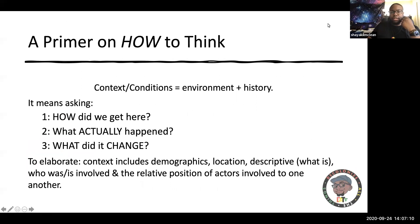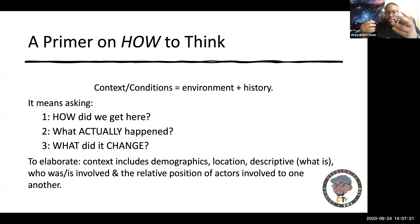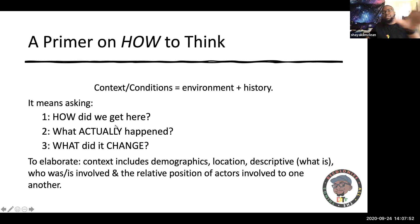A primer on how to think about these issues: it's important to always take into consideration the context conditions — what were things like at the moment an incident occurred, who were the actors involved. It means you have to ask: how do we get here, what actually happened, and what did this incident or event or interaction change? Other components of context include different demographics, who's involved, and the relative positions of individuals to one another within institutions.